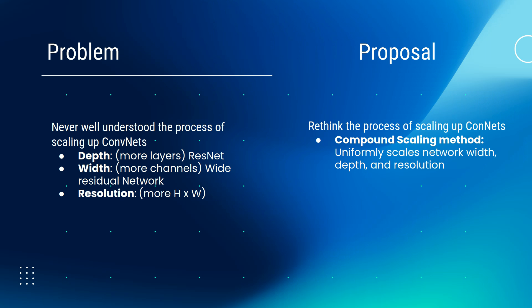What is the problem we have? We understand from previous empirical experience that we can scale up the model in terms of depth — depth means more layers. For example, like ResNet: from ResNet-18 to 50 to 152, we have better performance improvement. We know that increasing the layers gives you a more receptive field size, and then you can learn a better representation for a specific task.